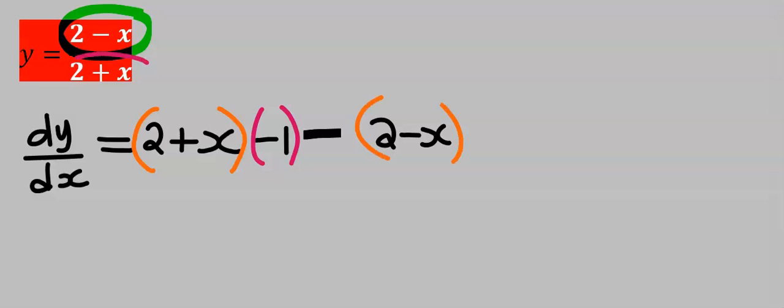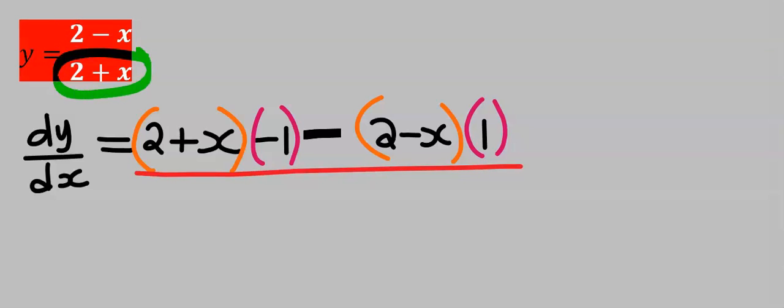Next, I will differentiate the denominator. If you differentiate 2, it is 0; if you differentiate x, it is 1. However, I will let this zero out, leaving only 1. Next, I will draw a line across the numerator. Next, I'm going to bring down the denominator, which is 2 plus x.